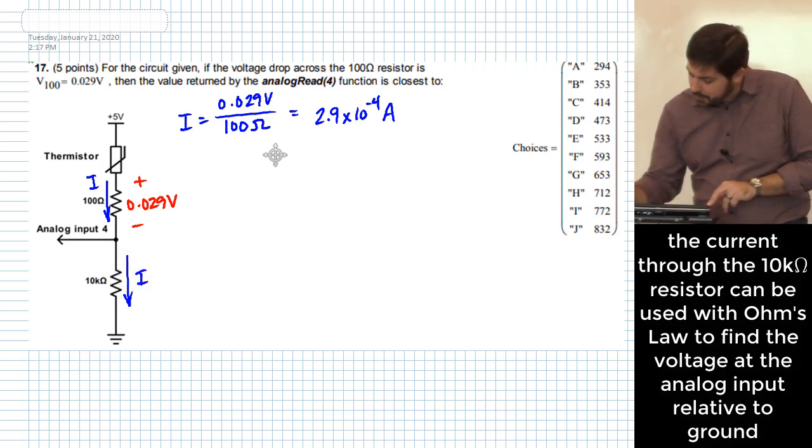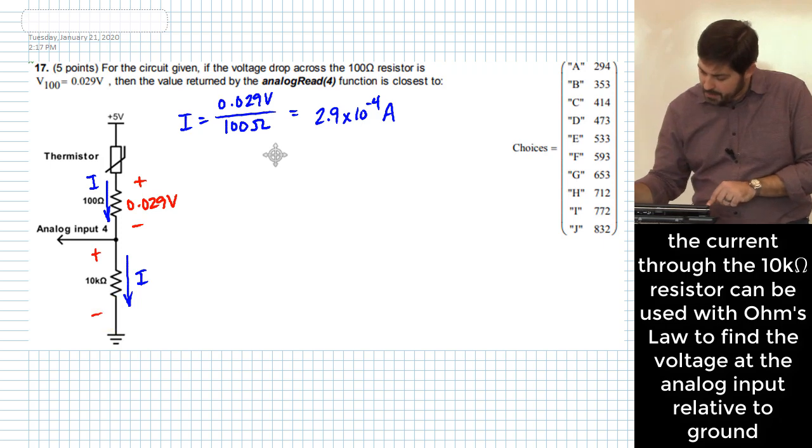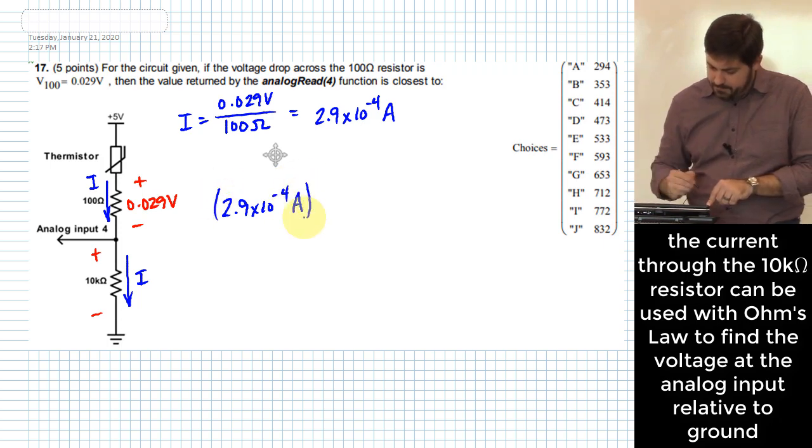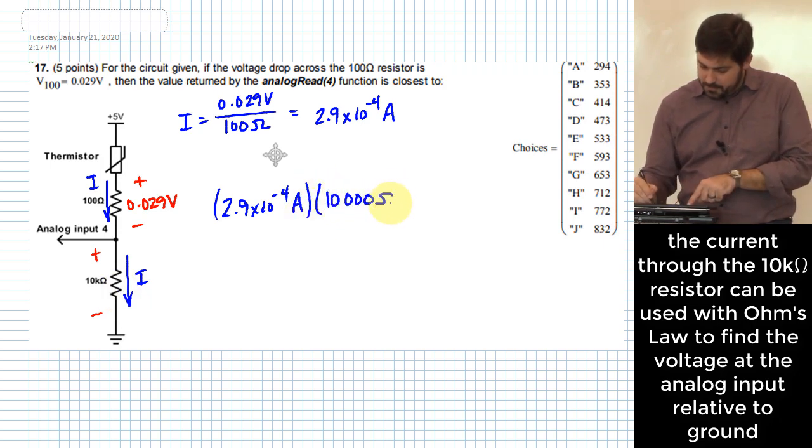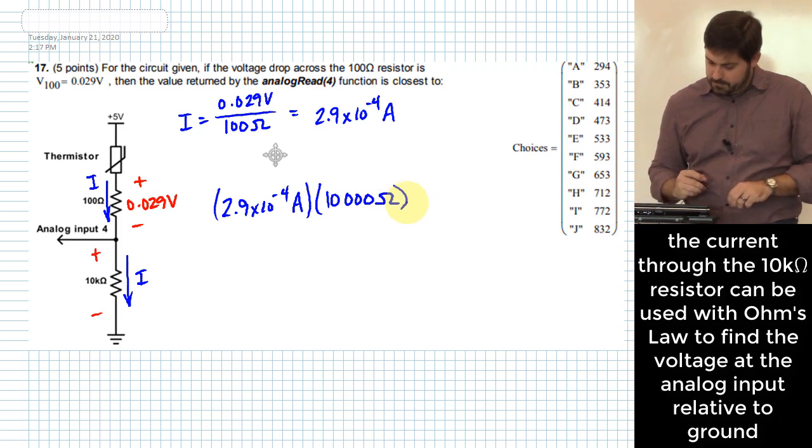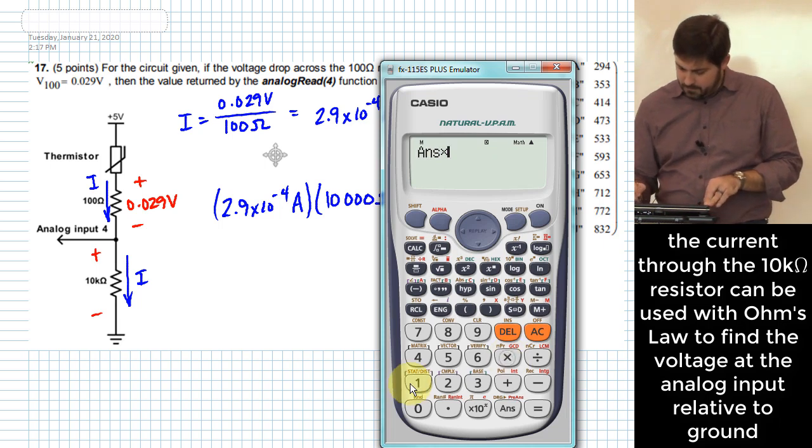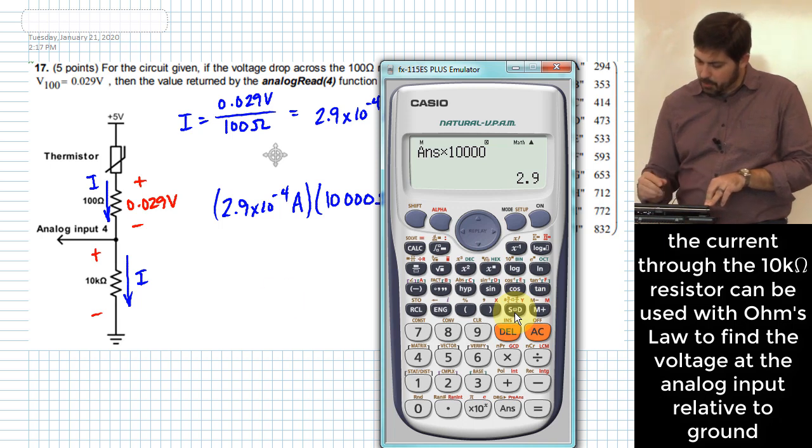And so we know then that the voltage across the 10 kiloohm resistor is going to be equal to that 2.9 times 10 to the minus 4 amps times 10,000 ohms. 2.9 volts.